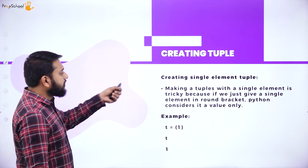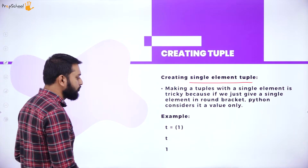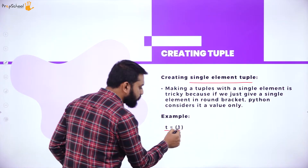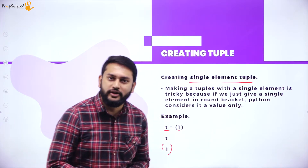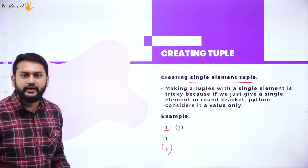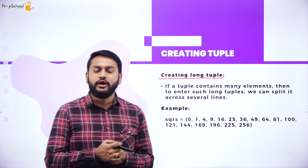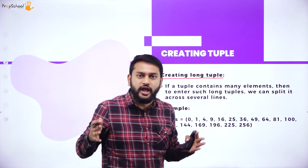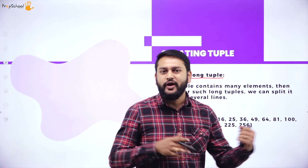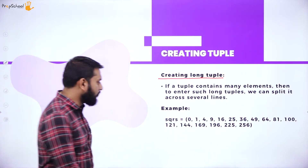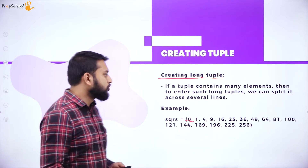There are also predefined functions for creating tuples, which I'll discuss in a coming slide. To create a tuple with a single element: t equals open parenthesis and close parenthesis with only one element — if you print this you get just that one value. For a long tuple, if you have multiple elements there is no specific number that defines 'long' — if you have a greater number of objects it is treated as a long tuple.